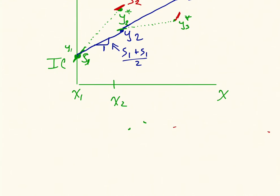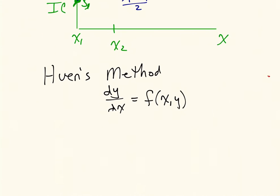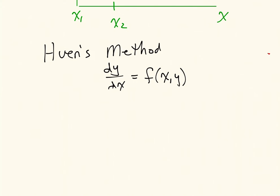We can write that down a little bit more formally. Huen's method has the following update. We're going to solve the differential equation dy/dx equals some function of x and y. And we're going to have the update: some new y value, y(i+1)* equals y(i) plus our slope evaluated at (x(i), y(i)) times our step size h. That's our predicted value.